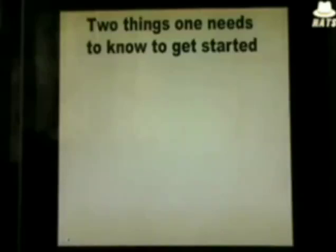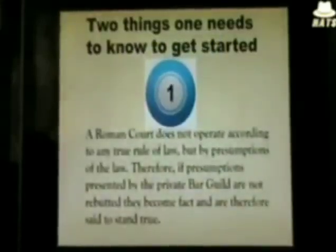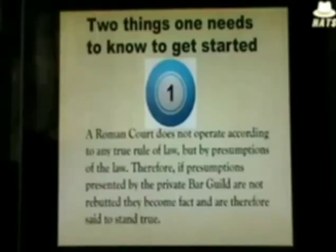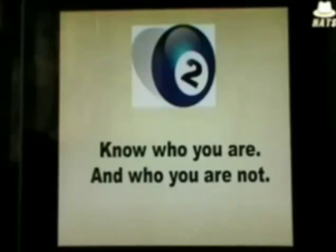Probably the two things you will need more than anything else to get started are: first, that a Roman court — or the courts that we know — does not operate according to any true rule of law, but by presumptions of the law. So if you don't rebut those presumptions, they become fact and stand as truth and law. Rebut the presumptions and they have no standing; if you don't rebut them, they become fact. The other thing is to know who you are and who you are not. Once you get those two things fixed firmly in your head, you're on the right way to setting yourself free.